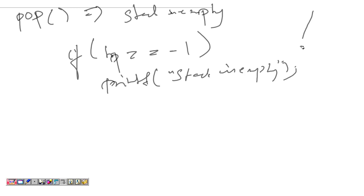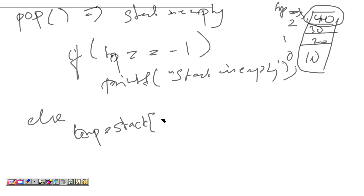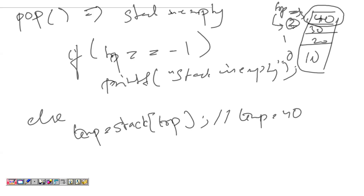Suppose the stack is not empty and has elements: index 0 has 10, index 1 has 20, index 2 has 30, index 3 has 40, and top is pointing to index 3. Pop will retrieve the topmost element. I store this value in a temporary variable: temp = stack[top], so temp will have 40. Then I decrement top to point to the second index and return the temporary value.